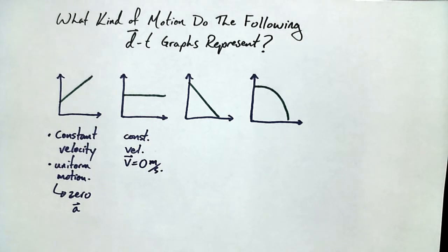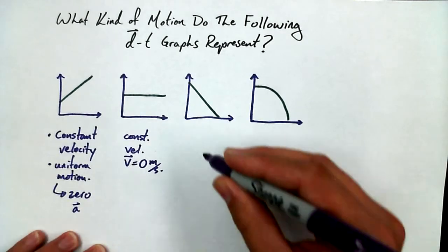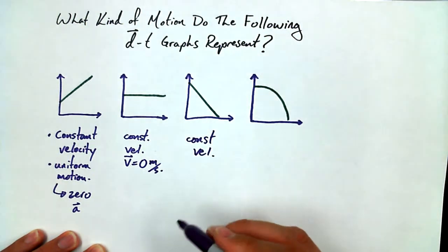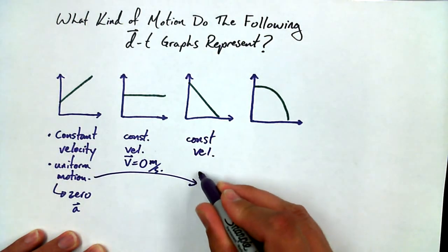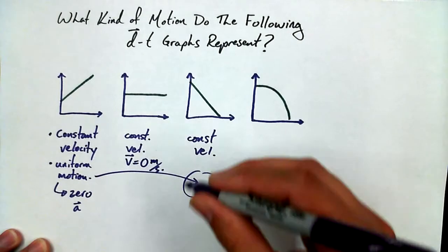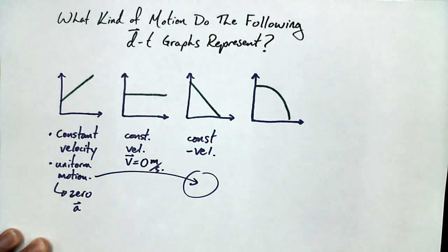Constant velocity? Yeah. So this one's also going to be constant velocity. It's also going to be uniform motion. What's different, then, between the third one and the first one? The third one's negative. Right. So we've got constant negative velocity versus constant positive velocity. Both constant, but one's going away from home, one's going towards home, or really the origin.